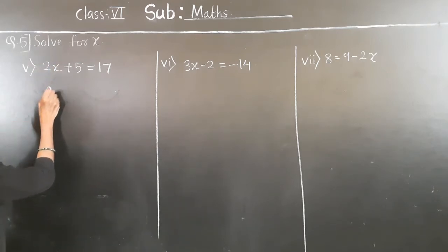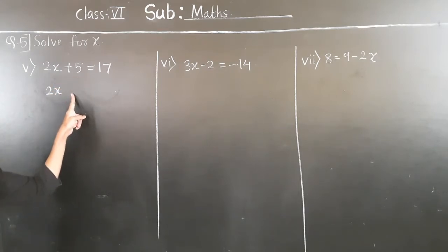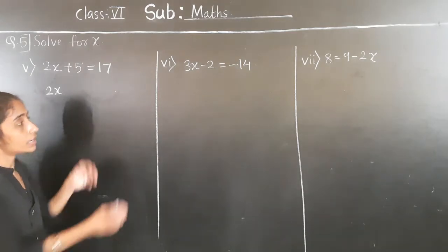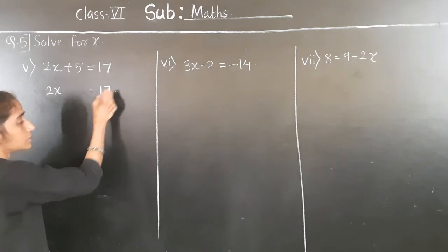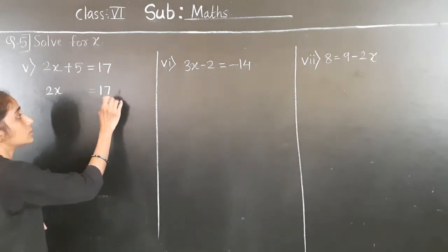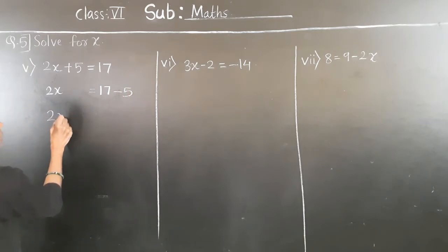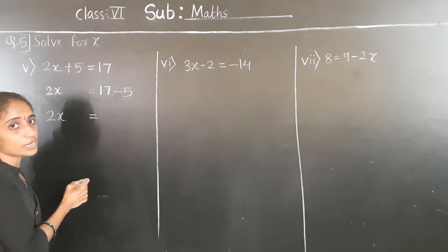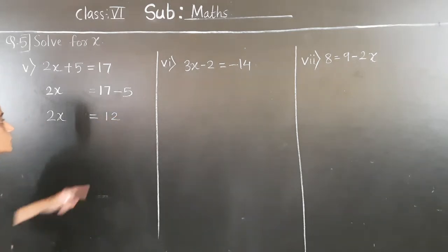So what remains on the left: 2x. Don't write plus 5 again here, because we are transferring plus 5 to the right hand side. The right hand side: write 17 as it is, then minus 5. So 2x is equal to 17 minus 5, which is 12.